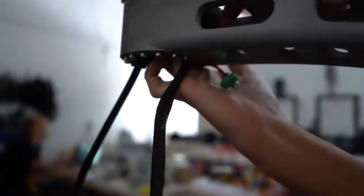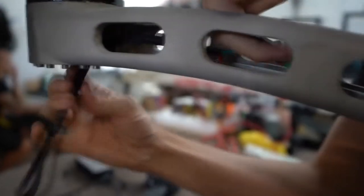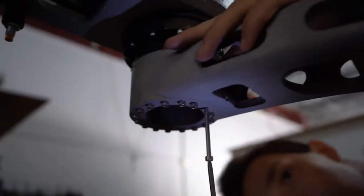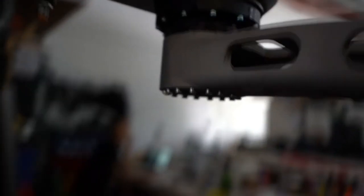Take the extruder wires and feed them through the prox arm. The machine is now fully assembled.